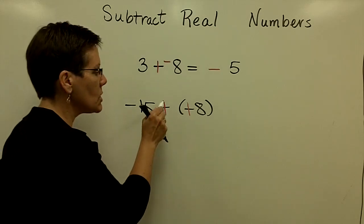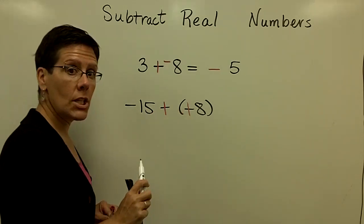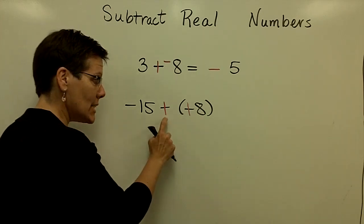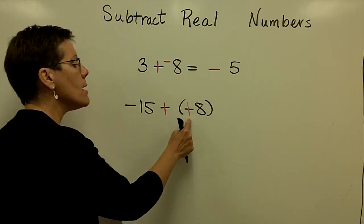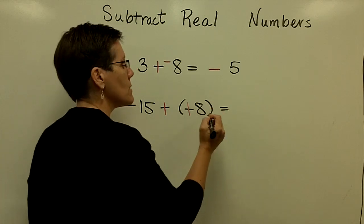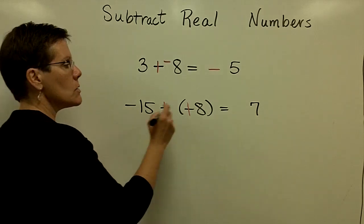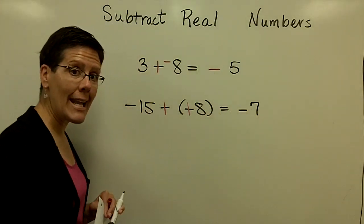Two swipes of my pencil, one to change this to an addition problem, one to change the sign of the value following. Now I follow the rules for addition because they have unlike signs. I'm going to subtract their absolute values. 15 minus 8 is 7. The 15 has more pull, so my answer will be negative.